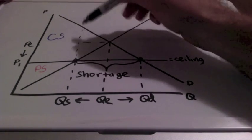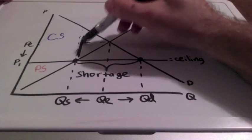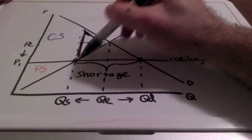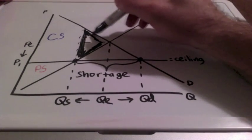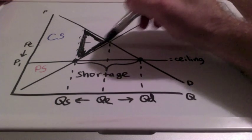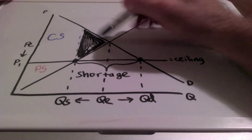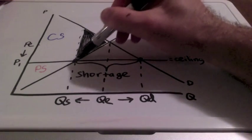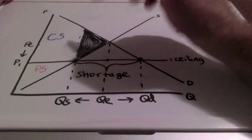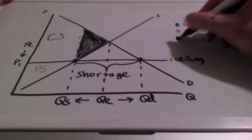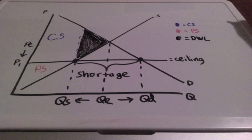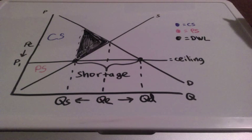However, we have a problem. This area that I'm shading in black represents consumer and producer surplus that used to be present and is no longer there. We call this dead weight loss. Dead weight loss is a loss of consumer and producer surplus when the market was at equilibrium.